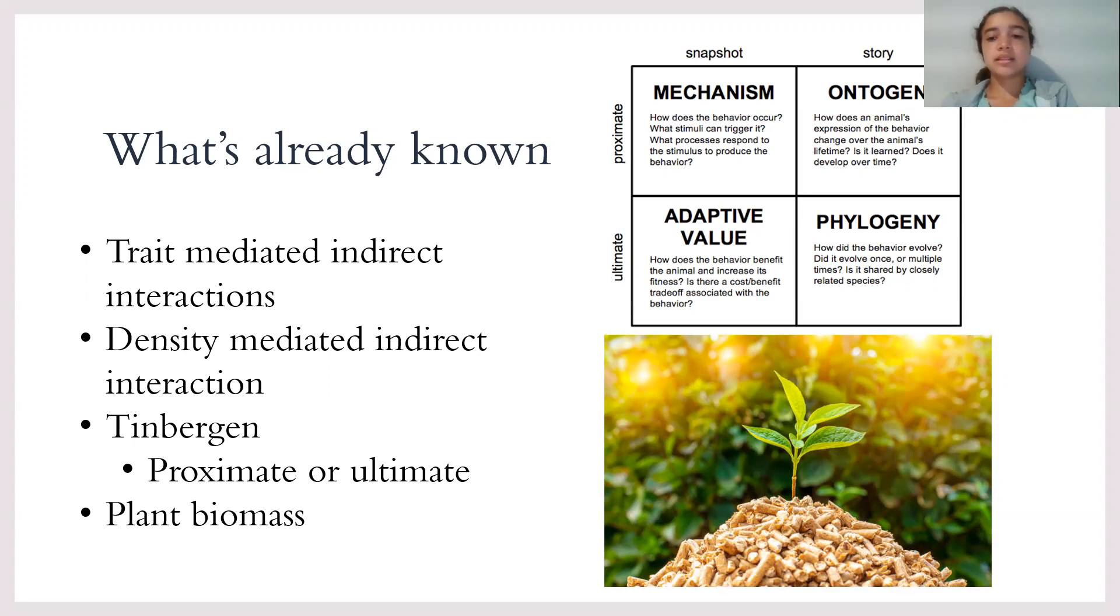Lastly, there's plant biomass, which is the measurement of the mass of a plant, both above and below ground. This is important when dealing with density mediated interactions because this is how you can tell if a plant or primary producer was affected by a predator prey interaction.